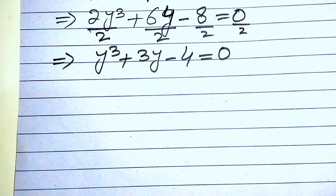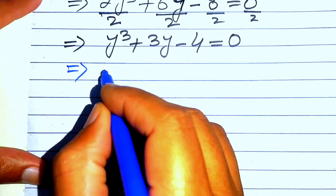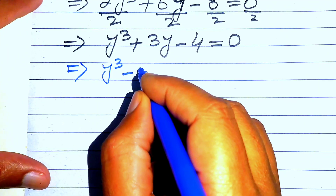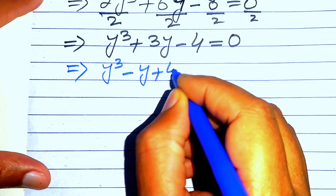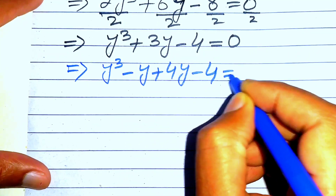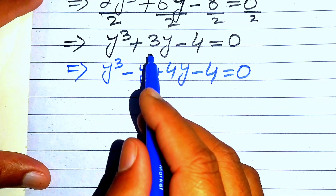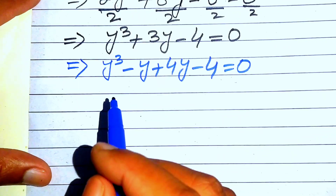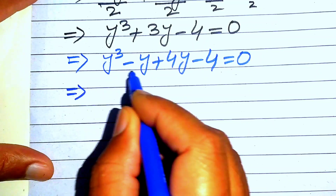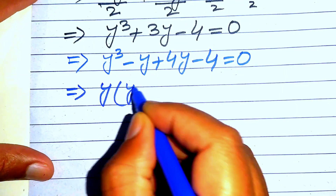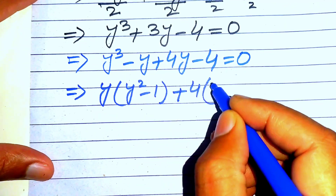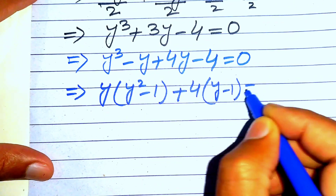Now we factor this cubic equation by splitting the middle term: y³ − y + 4y − 4 = 0, since −y + 4y = 3y. Taking y common from the first two terms gives y(y²−1), and 4 common from the last two terms gives 4(y−1).